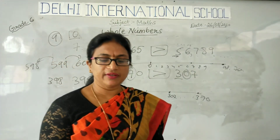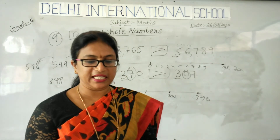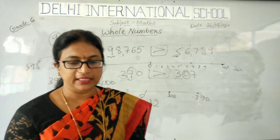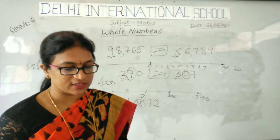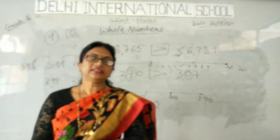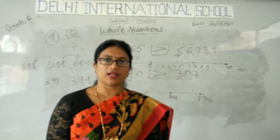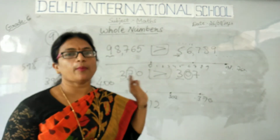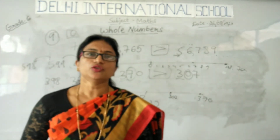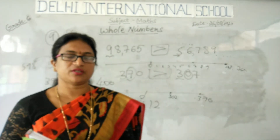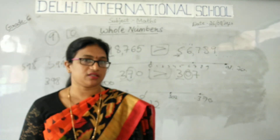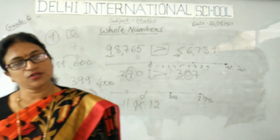In the next class we will start the properties of numbers such as commutative property, associative property and so on. This is all about today's class. Hope you all understood. Please solve the problems of Exercise 2.1 and try the problems present on page number 28. Thank you.